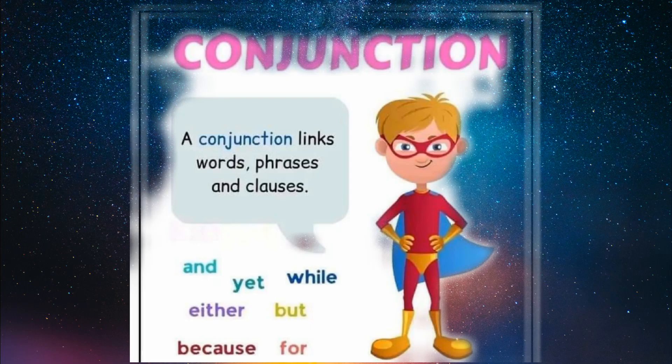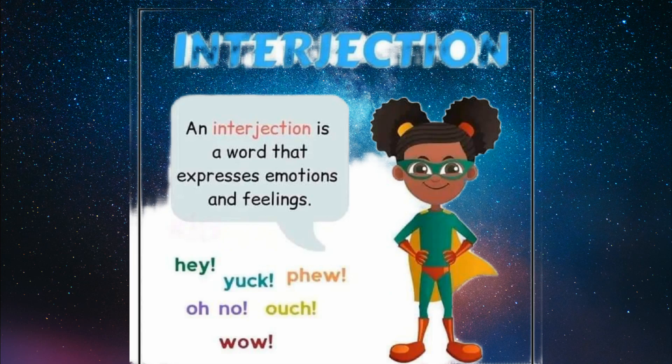Interjection — an interjection is a word that expresses emotions or feelings. Interjection وہ لفظ ہوتا ہے جو کسی کے emotions، expressions، یا feelings کو ظاہر کرے تو اس کو interjection کہتے ہیں۔ For example، خوشی، غم، سردی یا گرمی میں جو ہمارے منہ سے آواز نکلتی ہے تو اس کو interjection کہتے ہیں۔